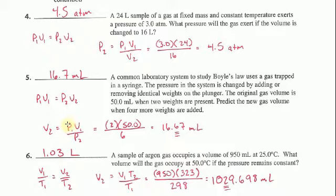And so my P1 is actually two for two weights. My initial volume is the 50 milliliters. And my second pressure, my final pressure, is six. Because when I added four weights to the original two weights, now I have a total of six weights.